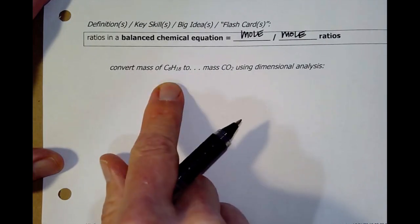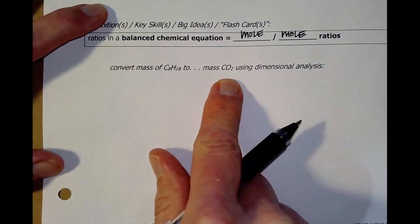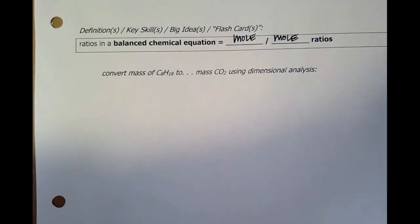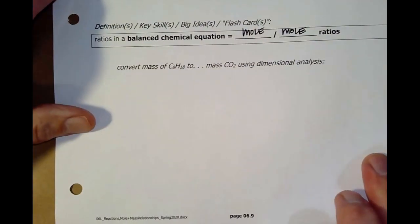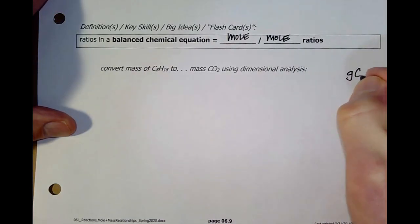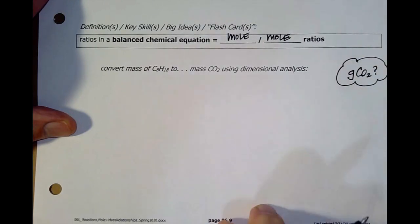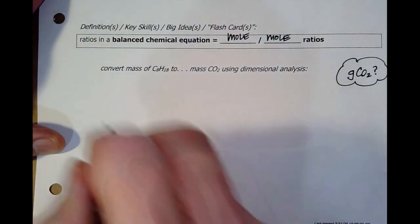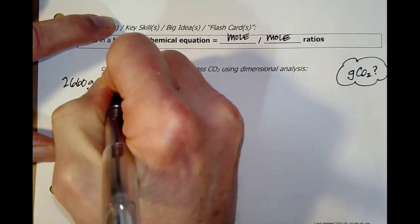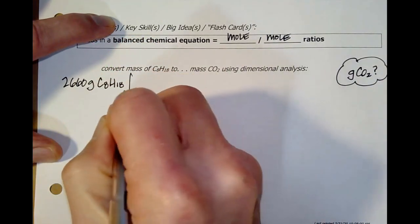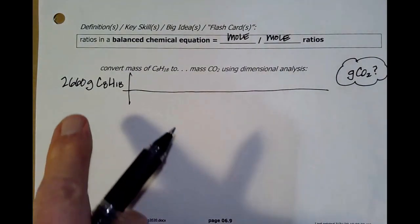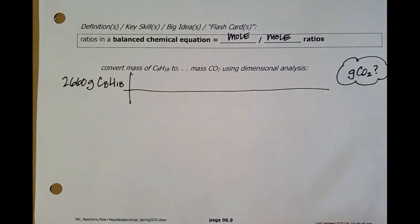It says, I want to convert the mass of C8H18 to the mass of CO2. So, just like we've been doing all along, I would say, well, okay. Let me move my camera up a little bit. What I'm trying to get to is grams of CO2. And what I've been given is 2660 grams of the C8H18. And you know what we want to do. We want to do this dimensional analysis. Multiply, divide by ratios or numbers until I can get grams of C8 canceled and just get to grams of CO2.